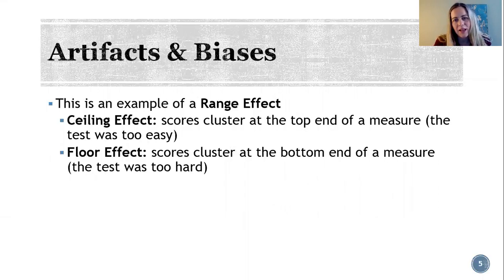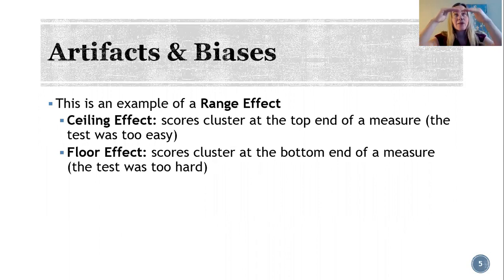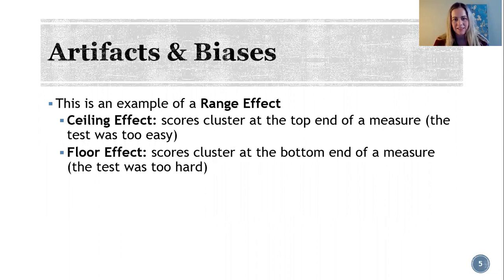This is an example of a range effect and specifically a ceiling effect. Basically, because kids' scores were already pretty high at the first testing session, there was no room for them to improve. This is a problem because the researcher might have concluded that the reading remediation program didn't impact kids' reading, when in fact it did — the measurement was just too easy and not sensitive enough to pick up on the change.